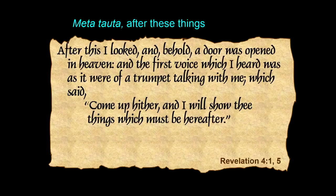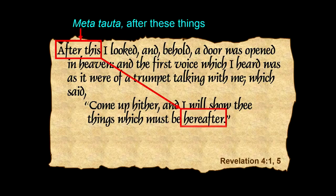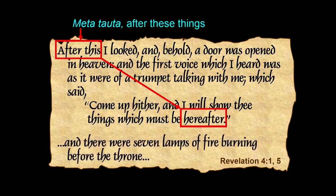Metatauta — after things. Chapter 4, verse 1: After this, I looked, and behold, a door was opened in heaven. The first voice said, Come up hither, and I will show thee things which must be hereafter — metatauta again. The subtlety most people miss about chapter 4, verse 5, is that the seven lamps of fire that were on the earth in chapter 1 are now in heaven. They're in the throne room of the universe.